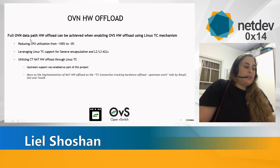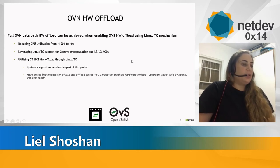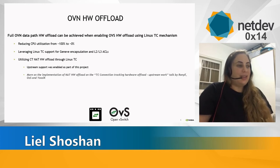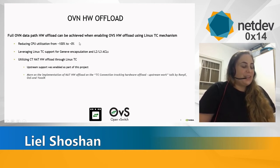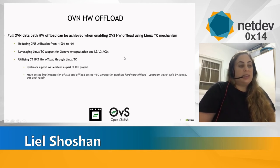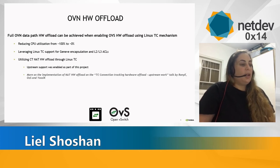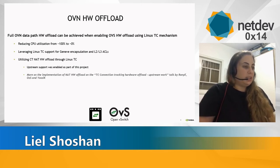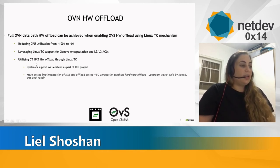The goal was to achieve full OVN data path hardware offload, and for that we needed full OVS hardware offload with the relevant capabilities that OVN utilizes. OVS is offloaded using the Linux TC mechanism. By achieving full OVN data path hardware offload, we reduced CPU utilization dramatically. For that, we leveraged Linux TC flower support for Geneve encapsulation and L2 and L3 ACLs, and we needed to have connection tracking NAT hardware offload through Linux TC. Work was done on this and it is now upstream to enable this connection tracking NAT hardware offload.